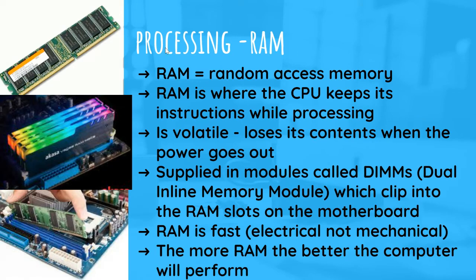RAM — Random Access Memory: This is where the CPU keeps its instructions while processing. It is volatile, meaning it loses its contents when the power goes out. RAM is supplied in modules called DIMMs — Dual Inline Memory Modules — which clip into the RAM slots on the motherboard. RAM is fast and electrical, not mechanical. The more RAM you have, the better the computer will perform.